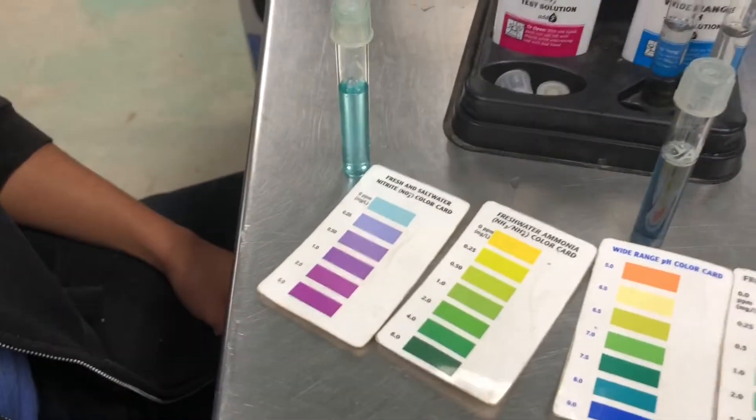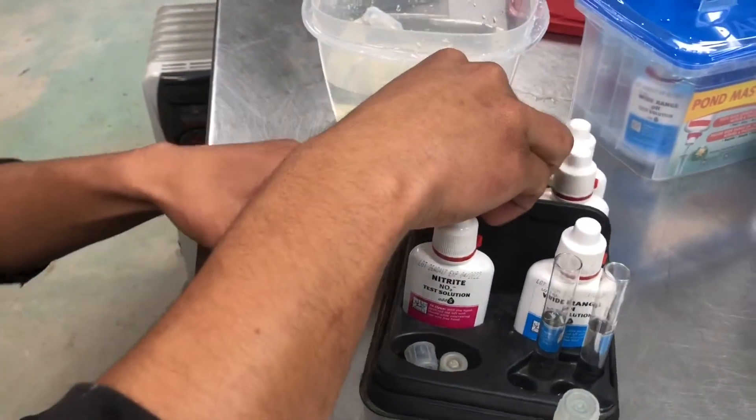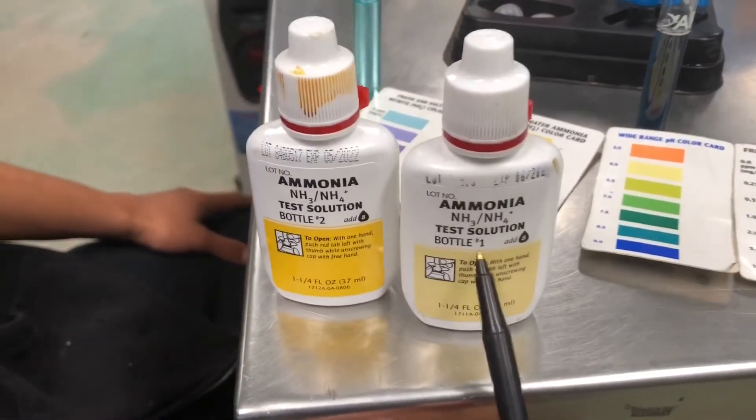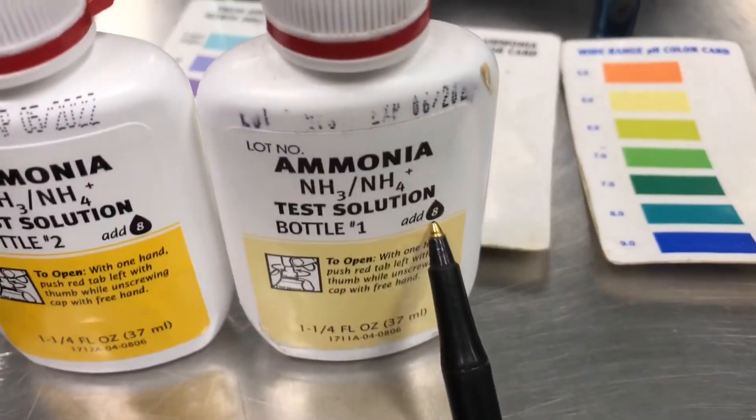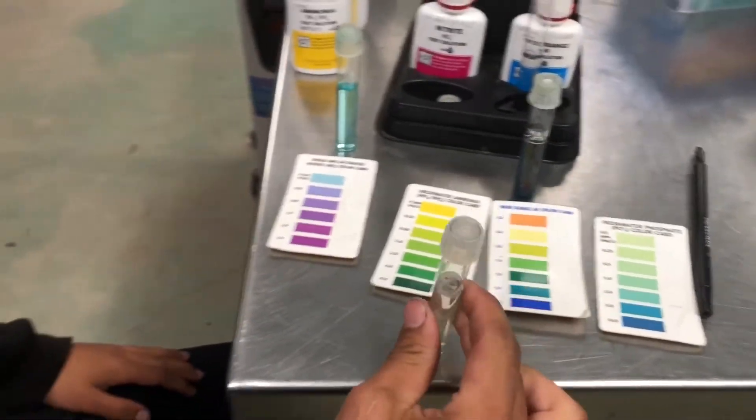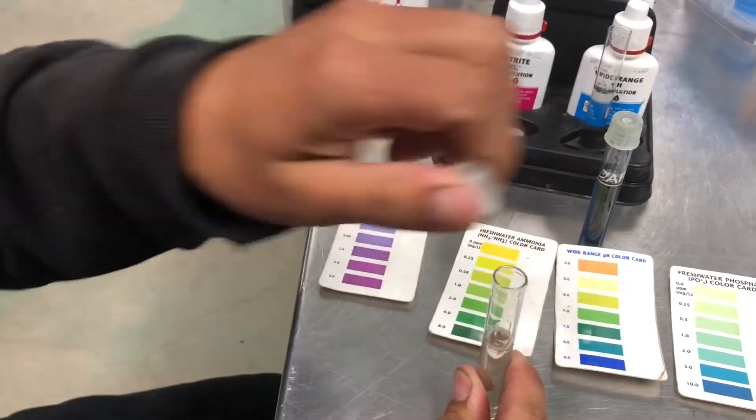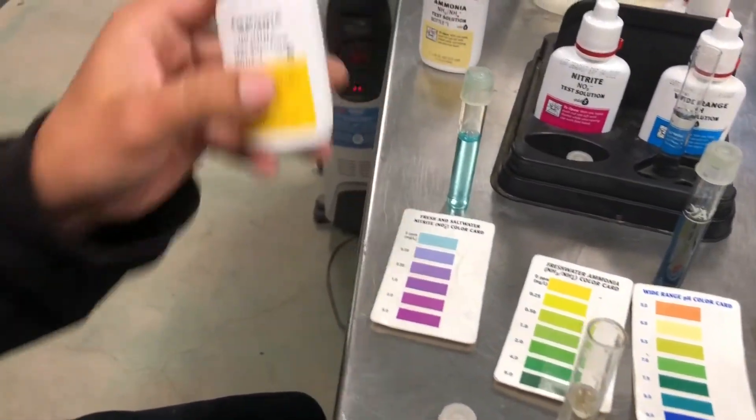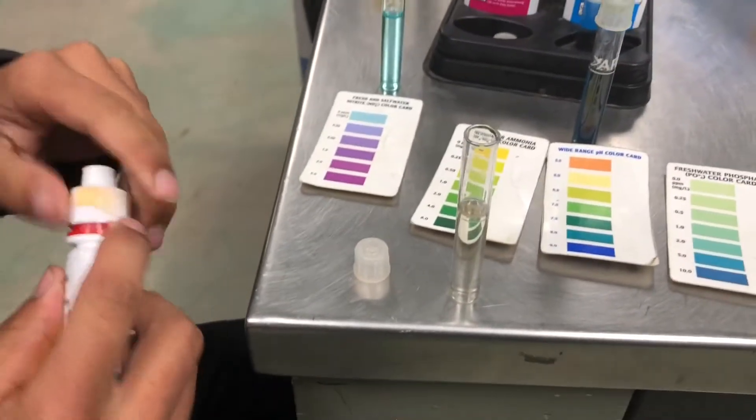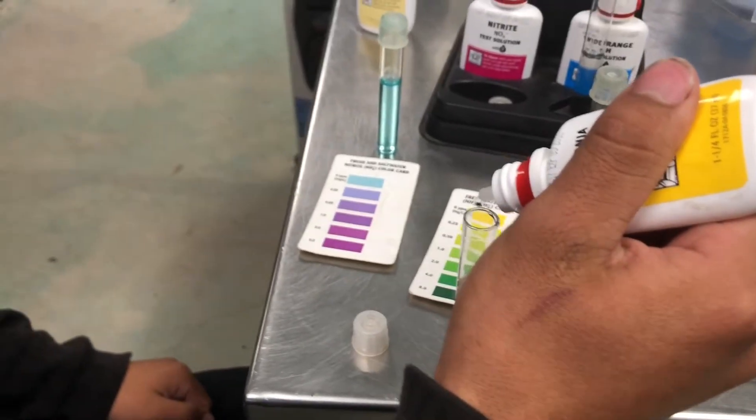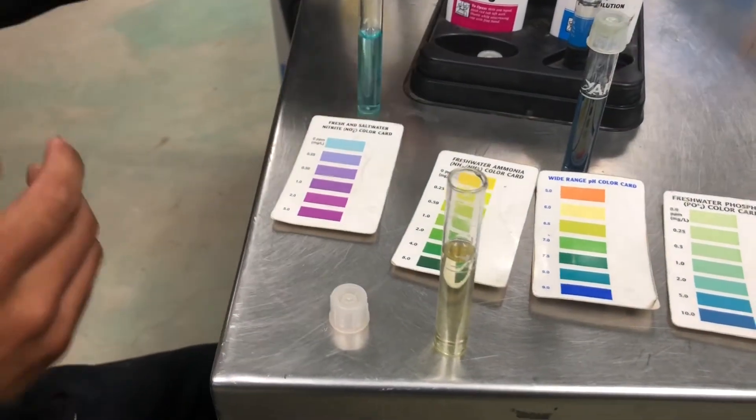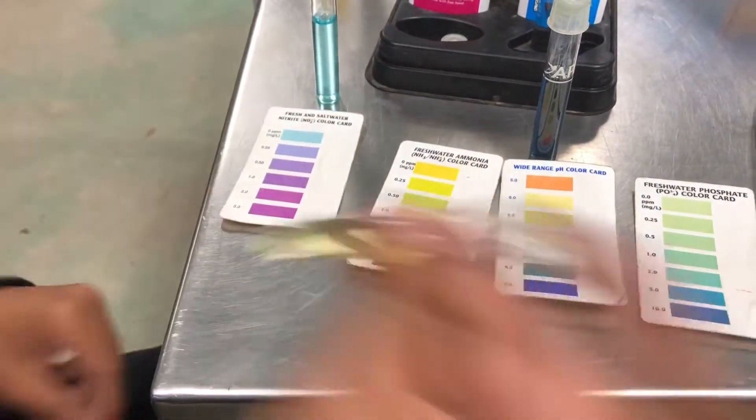Okay, so now the ammonia. Ammonia is going to be a little different. It's a two part. And the first one, let's see, it says bottle one. And it's going to be eight drops. Okay, so you want to do bottle one first. Okay, so now let's put bottle two. And bottle two, it says the same thing. It says add eight drops. Okay, and do the same thing. Put the cap on. Give it a good shake.